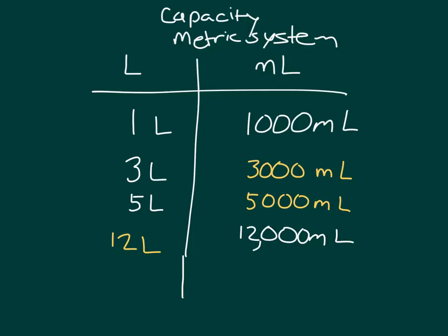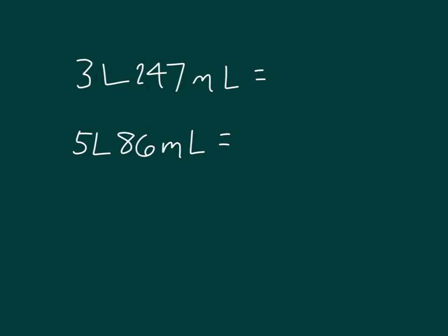Let's look to rename some where we have both liters and milliliters. Here I have two problems. Let's start with this first one. Three liters along with 247 milliliters equals blank. In this case, I'm renaming to a smaller unit, to milliliters in particular.